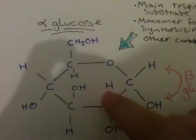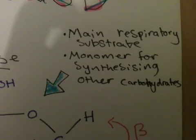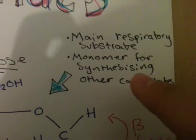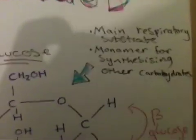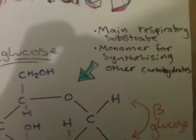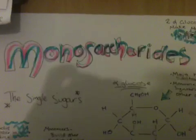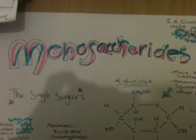An alpha-glucose on its own is the main respiratory substrate, and it's a monomer for synthesizing other carbohydrates. And there you go — monosaccharides. Wonderful things.